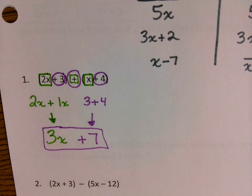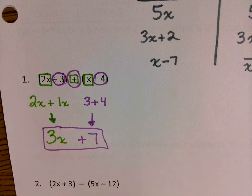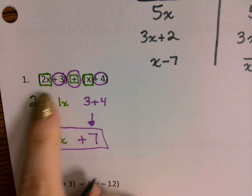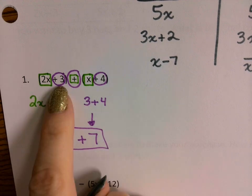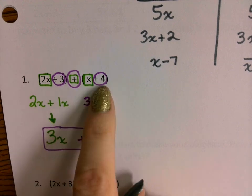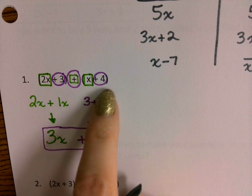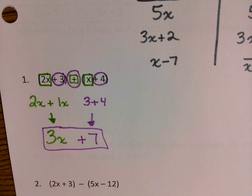You're taking your like terms from your first linear expression and combining them with the like terms from your second linear expression — just combining those linear expressions together.